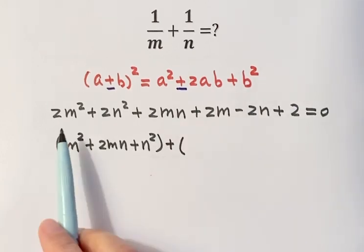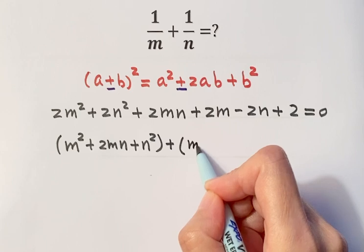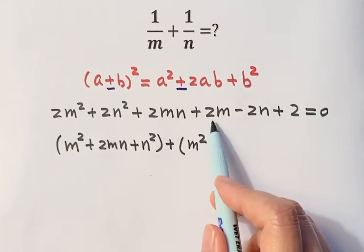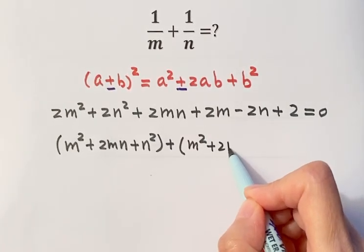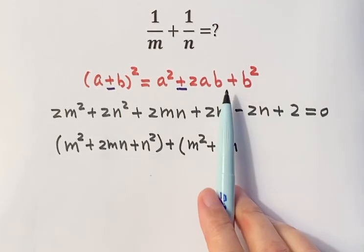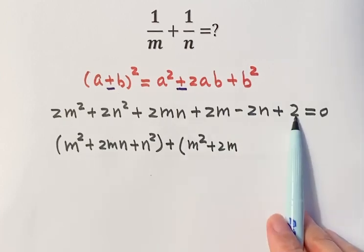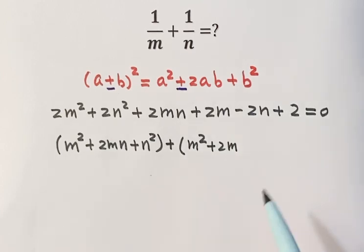Next group, because we still have 1m squared left, put it here. Then here plus 2m. Because we have m squared plus 2m, then also we try to make a complete square, so then we need 1. So here we have 2. So 1 plus 1 equals 2. So we put 1 here.